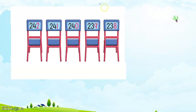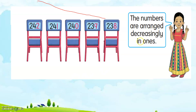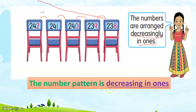If we see all the numbers here from the larger to the smaller, that means it is descending. The numbers are arranged decreasingly in ones. Am I correct? 2 became 1, 1 became 0 — that means it is decreasing by 1. 242 decrease 1 gives 241, and then 240, 239, 238. The number pattern is decreasing in ones because it is descending order. So we should write decreasing here.